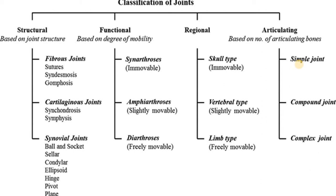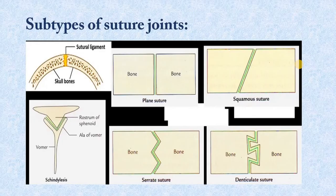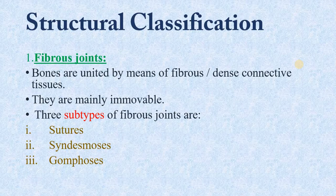I have also told you about the structure of joints in a linked video, so you can check that. Now we will talk about structural classifications. For fibrous joints, two bones are connected with fibrous connective tissue. These joints are generally immobile. During fetal development, sutures and syndesmosis form as fibrous joints.